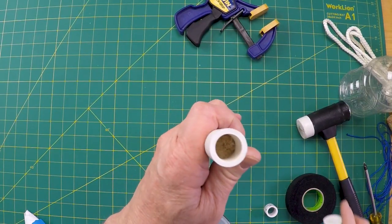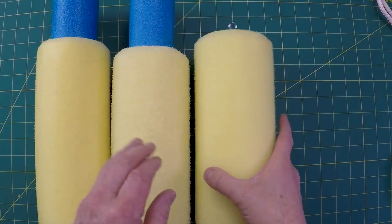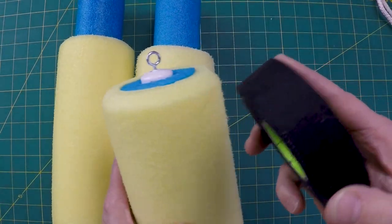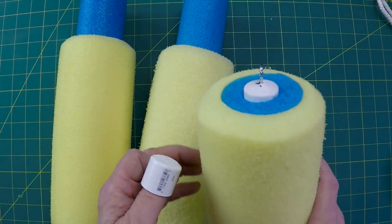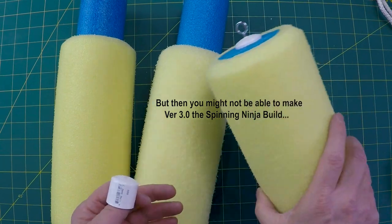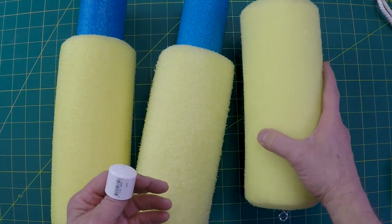I'm gonna put the end cap on. If for some reason this wasn't a tight enough fit you can use something like hockey tape or electrical tape right here to increase the friction. If you're totally confident that you're good to go then you just glue it in place.